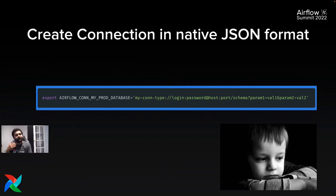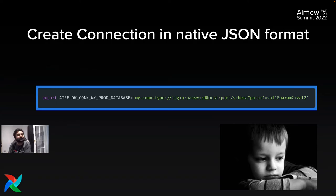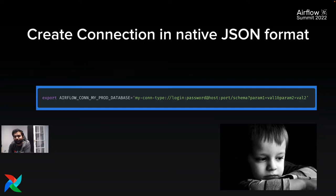Moving on to creating connections using native JSON format. Thanks to Daniel Standish, you can now use native JSON format for creating Airflow connections either using environment variables or using the CLI. Previously, the URI format was not very human-readable — every time you needed to create a connection you'd have to look at the Airflow docs to find the correct URI for a given connection type.